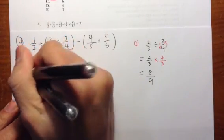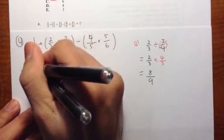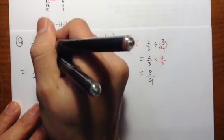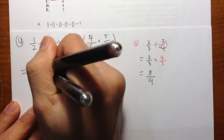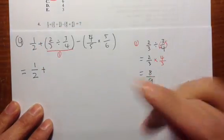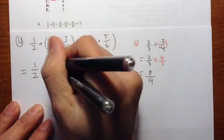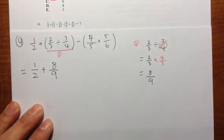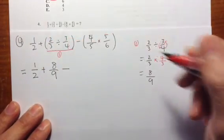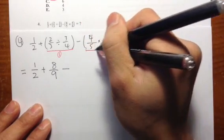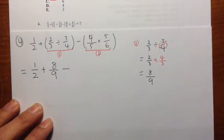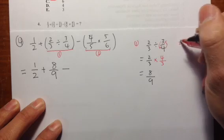So let me continue. The 1 half I haven't touched yet, so I'll just bring it down. Likewise for the plus. This turns out to be 8 over 9. And then I have the subtract, and I'm going to figure out the second parentheses right now.